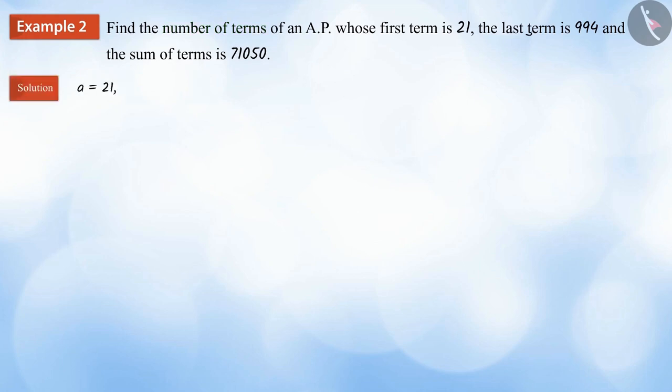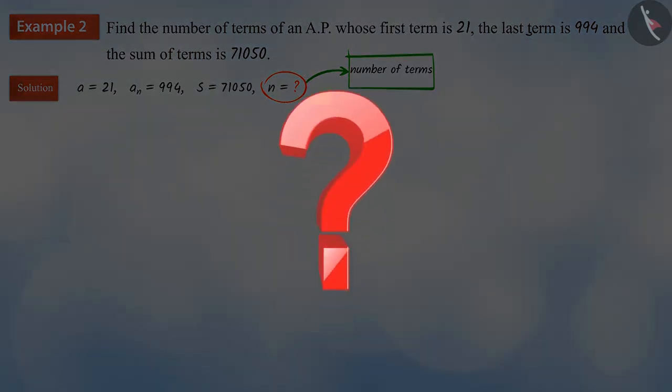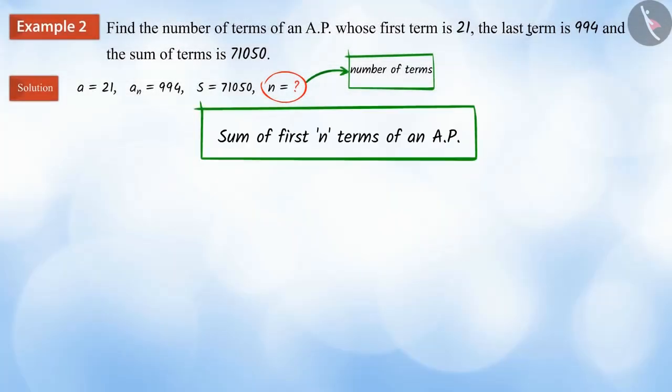As per the question, the first term of the arithmetic progression is a, the last term is an and the sum of all the terms of the arithmetic progression is s. With the help of which, we have to find the total number of terms n of the arithmetic progression. Can you tell what we need to do for this? Yes. Here, we have to use the formula for the sum of the first n terms of the arithmetic progression.